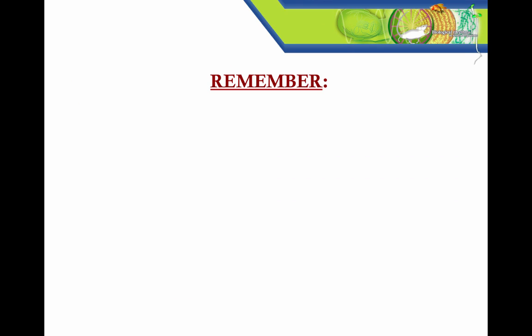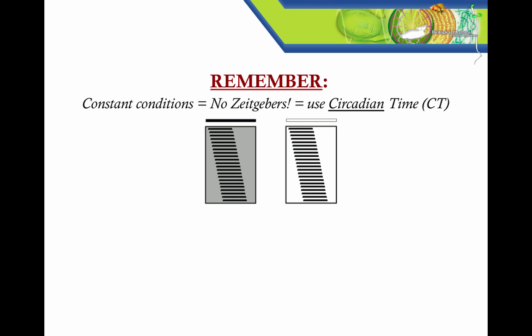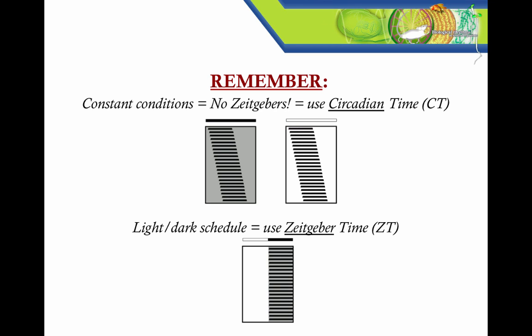So, in summary, both circadian time and Zeitgeber time are used by circadian biologists to help us ask and answer questions about the timing of an organism's rhythms. Like, when did this animal become active? Or, how big was that phase shift? Circadian time is based on internal, subjective time, in constant conditions, and we use activity transitions to mark it. Zeitgeber time, on the other hand, requires a rhythmic Zeitgeber like a light-dark cycle, and we use the Zeitgeber transitions, like lights on and off, to mark it.